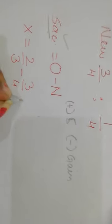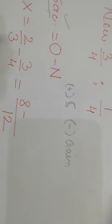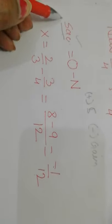Now for X, the sacrificing ratio is old minus new: 2/3 minus 3/4. We take the LCM which is 12. So: 4×2 = 8, minus 3×3 = 9. The answer is minus 1/12. Since the answer is negative, X is gaining, not sacrificing.